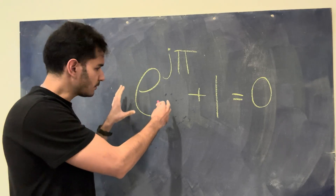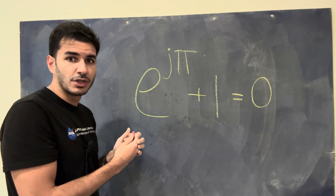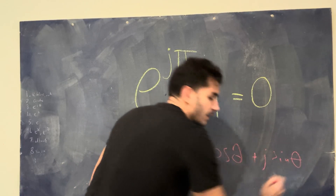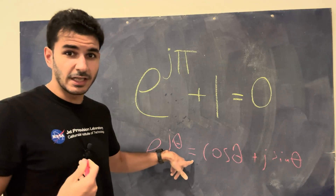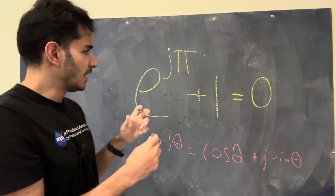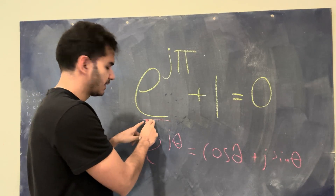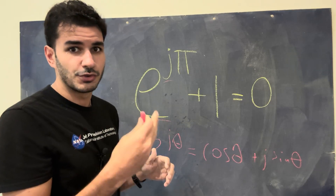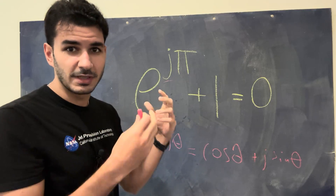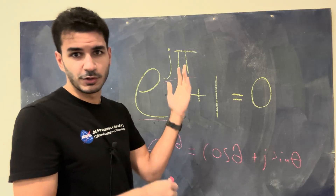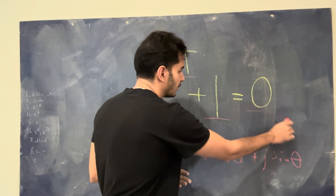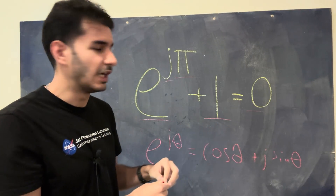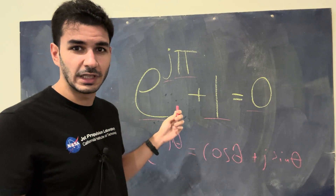Before I show you why this equation is beautiful, let me write the equation from which this comes: e to the j theta equals cosine theta plus j sine theta. This equation, to me as an engineer, is a million times more beautiful. The reason the other form is perceived as beautiful is because it has five constants: E (like 2.71828), I or J — electrical engineers use J because I is reserved for current — pi (3.14..., relating circumference to diameter), then 1 and 0. So five constants representing an equation. It looks cool, it looks pretty, but in my opinion, this is a superficial way to think about math.